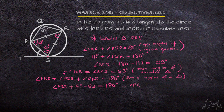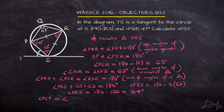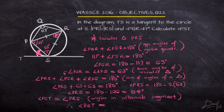Once we find PRS, we can apply another principle of circle geometry to find the requested angle PST. Our PRS solves to be 54 degrees. Looking at this diagram, the angle subtended by a tangent is always equal to the angle in the alternate segment of the circle. That means angle PST is also going to be 54 degrees, equal to angle PRS. That is the simple solution to our question.